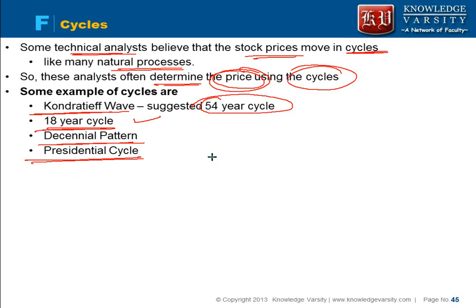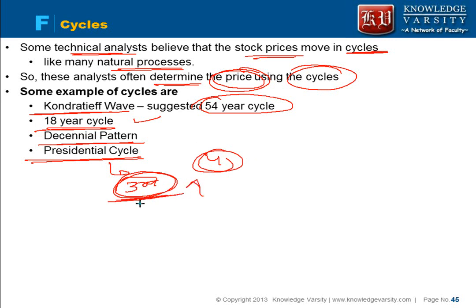The presidential cycle means stock prices follow a 4-year cycle tied to presidential elections. In the third year of any presidency, stock prices tend to increase because in the fourth year there is an election — politicians try to appease people by decreasing interest rates, resulting in a free flow of money in the economy, which increases stock prices.